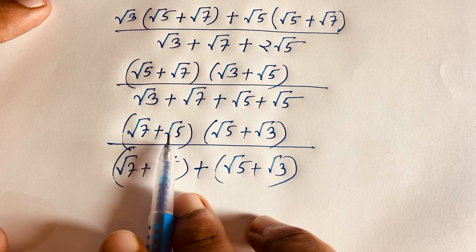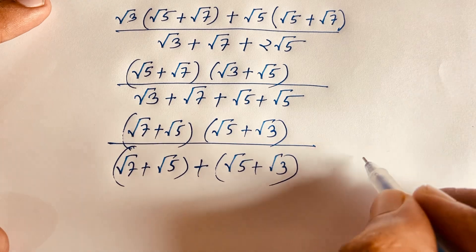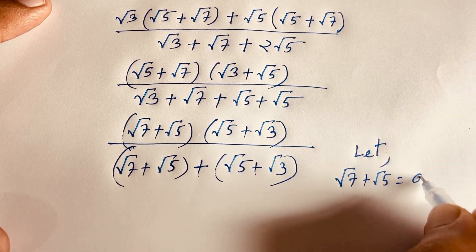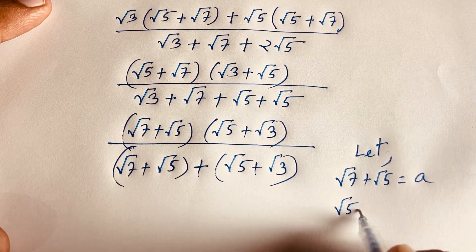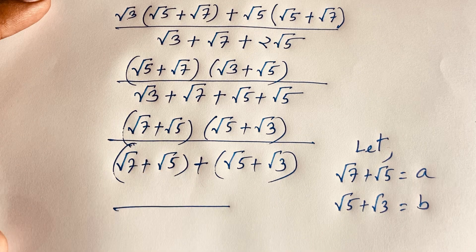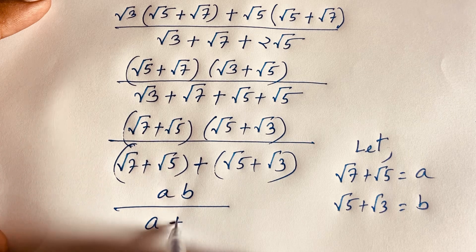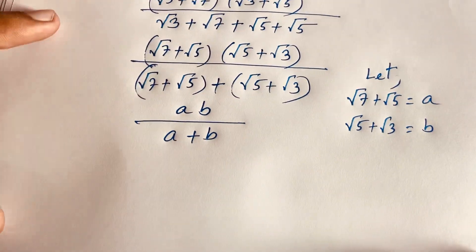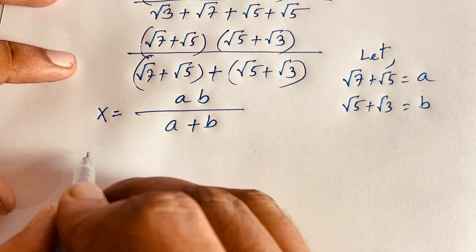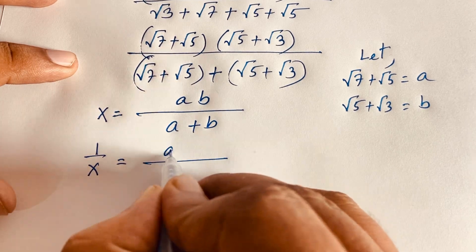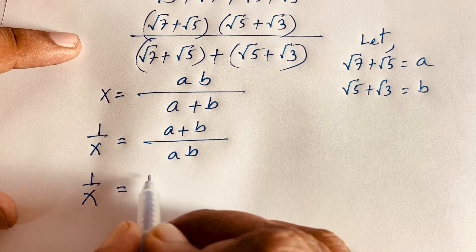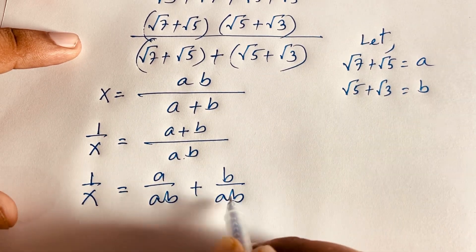At this point in this radical math question, we let square root 7 plus square root 5 equal to a, and square root 5 plus square root 3 equal to v. So the numerator becomes a plus v, and the denominator is also expressible in terms of a and v. We let x equal this expression, so now we need to find the value of x. We have 1 over x equals a plus v over ab.